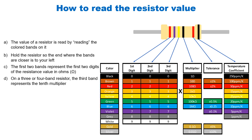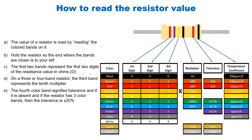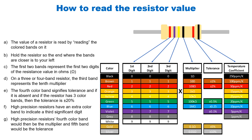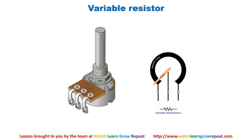On a three or four band resistor, the fourth band is the tolerance — how accurate the value of the resistor is. Certain resistors have higher precision, so they have extra bands. The extra band is for the next significant digit. In the previous case there were only two significant digits then the multiplier; here there are three significant digits then the multiplier.